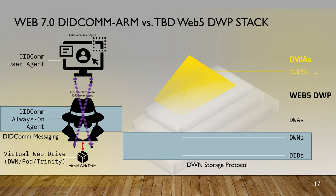Where they really differ is in which layer the protocols are situated. In DWNs, the storage protocol is at the storage layer — the bottom tier. In Web 7, the DIDCOM messaging protocol is in the middle tier, connecting agents to agents. The other big difference is where the logic lives. In Web 7.0, there's a BPMN workflow engine as part of the DIDCOM agent. When messages with attachments — invoices, purchase orders, driver's licenses — are received, they can be processed directly by the workflow engine and optionally saved down into the web drive.